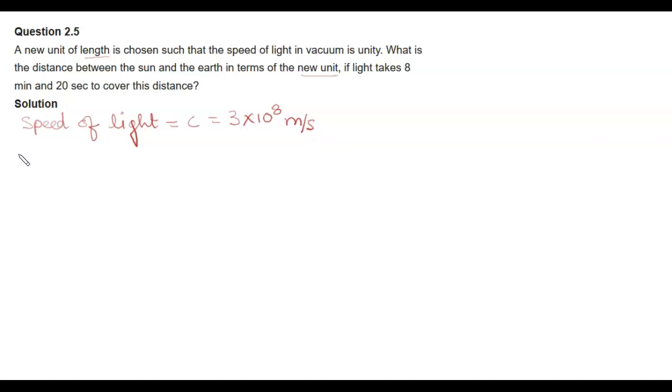This unit is defined in meter per second. According to question, this unit is changed and now it is velocity or speed of light is equals to 1 new unit of length per second, where this NL is new unit of length.